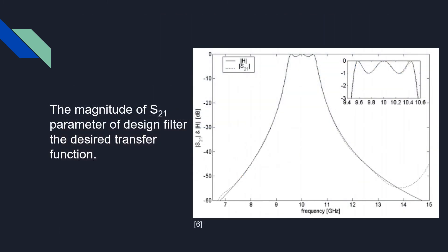In this study, the relative electric permittivity and the length of the layers are optimally obtained using the least-mean-square method. A bandpass filter is used to control the frequency of the wave. As seen in the graph, the function S12 has a bandwidth from 9.4 GHz to 10.6 GHz.